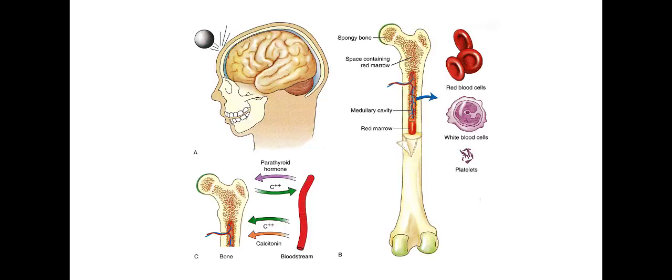Other functions of bone include protection. The most vulnerable parts of our body are encased in bone. Bone also acts as a storehouse for minerals, such as calcium. Calcium is needed for muscle contractions. So if we're ever deficient in calcium, we have a supply readily available. Finally, bone produces blood cells. But as I said, we are primarily interested in this class in bone's function in the production of movement.